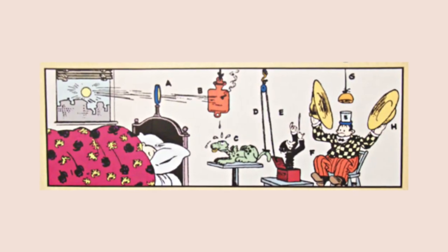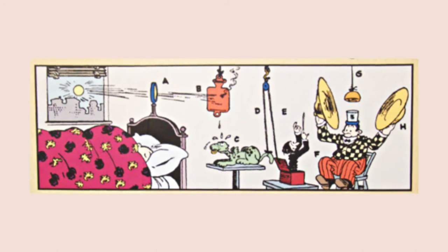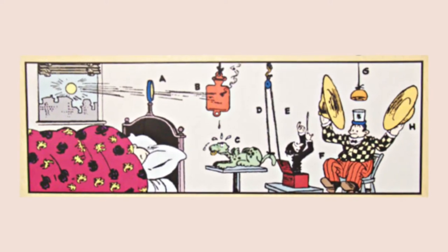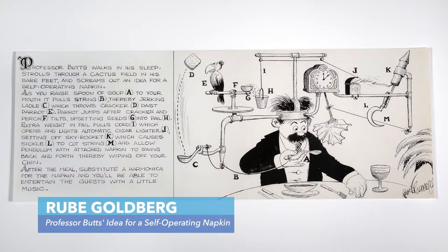Rube Goldberg is famous for his illustrations or cartoons of chain reaction machines. Here's a good one. It's named the self-operating napkin. Let's observe and evaluate.